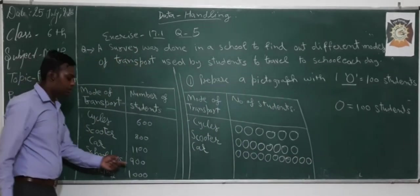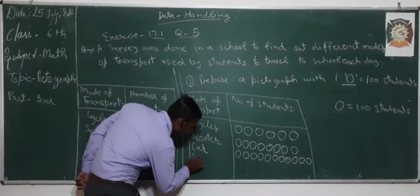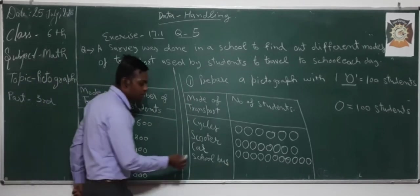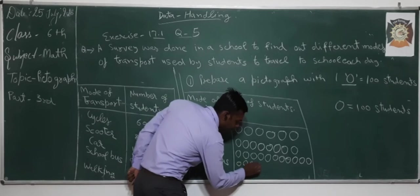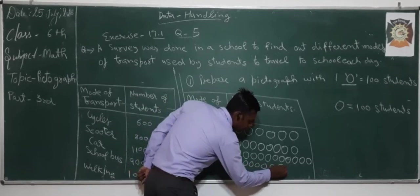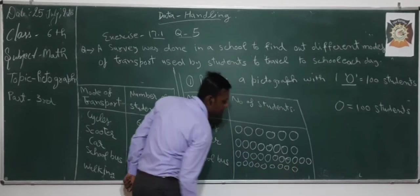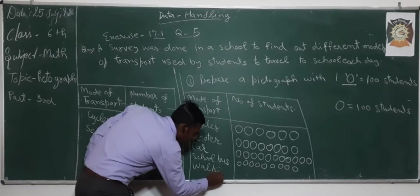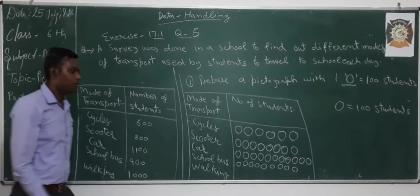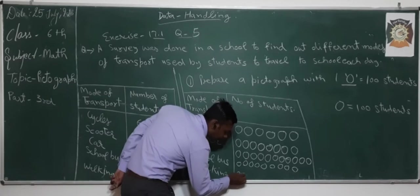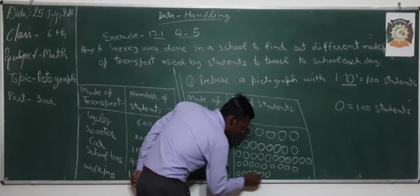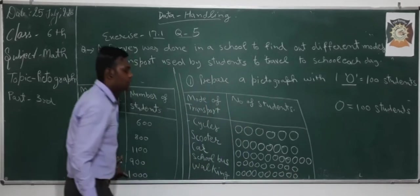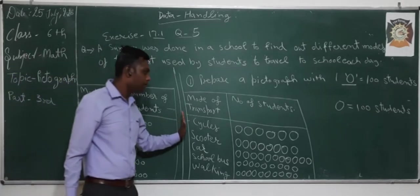Next, school bus — that is 900 students — so we write 9 circles to represent 900. And for walking, there are 1000 students, so we write 10 circles. That is how we represent this information in the form of a pictogram.